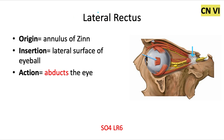The lateral rectus is our other exception for the video — it's innervated by cranial nerve 6 instead of cranial nerve 3. The name of cranial nerve 6 is the abducens nerve, and the abducens nerve enables the lateral rectus to abduct the eye, pulling the eye away from the nose.